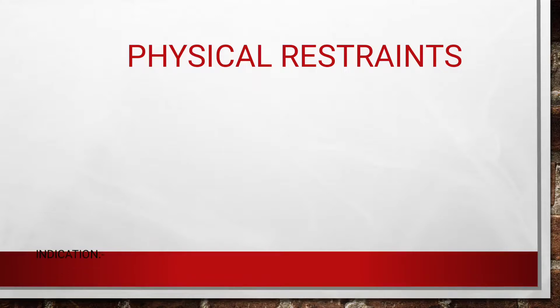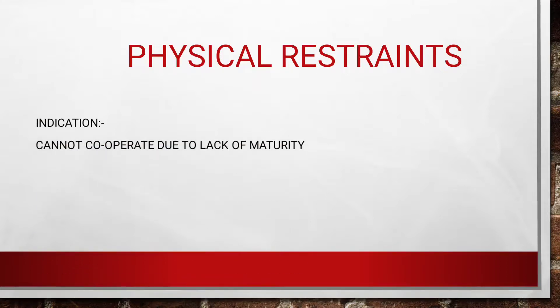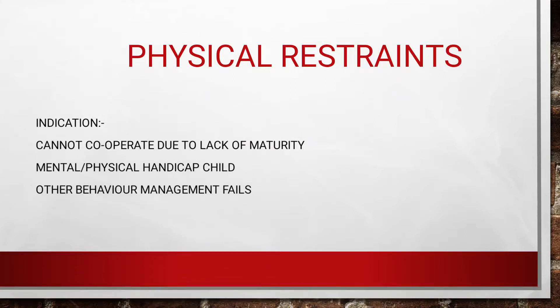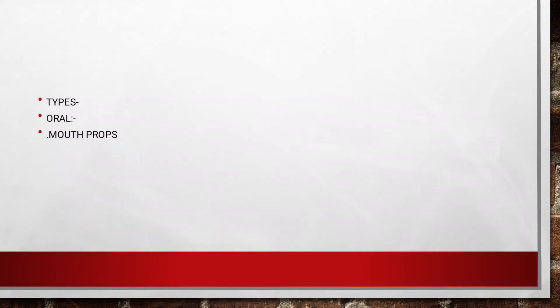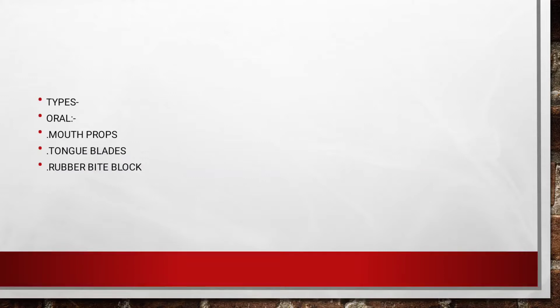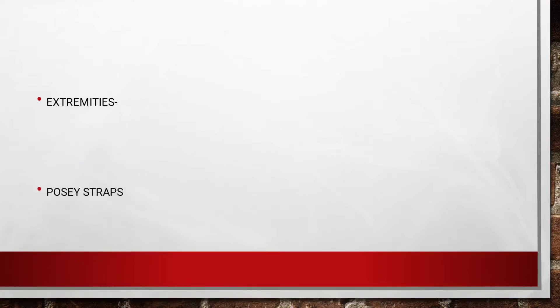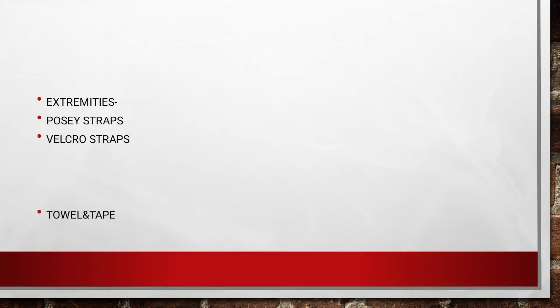Physical restraints: Indications include children who cannot cooperate due to lack of maturity, mentally and physically handicapped children, and cases where other behavior management fails. Types include oral restraints consisting of mouth props, tongue blades, and rubber bite blocks; body restraints consisting of triangular sheets, pedi-wrap, and extra assistant; extremity restraints such as papoose straps and Crow straps; and head positioners, plastic bowls, and extra assistance.